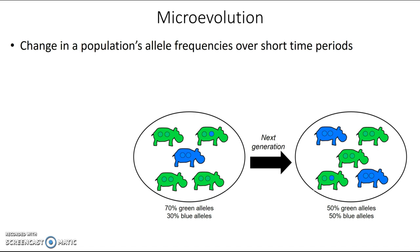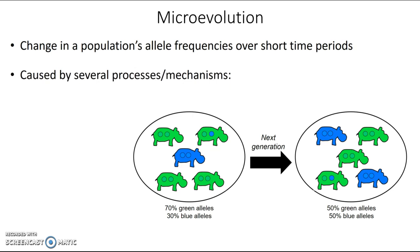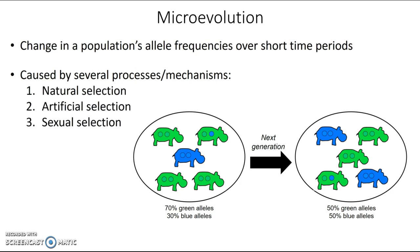So what's causing changes in allele frequencies? There are several different processes or mechanisms that could be working here, and you need to know six of them: natural selection, artificial selection, sexual selection, genetic drift, gene flow, and mutation. In this video, we're going to go into each one in more detail.